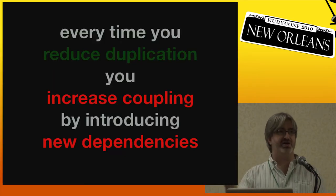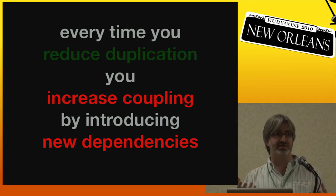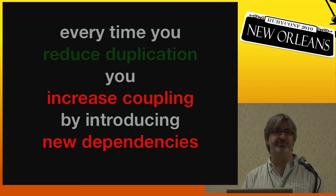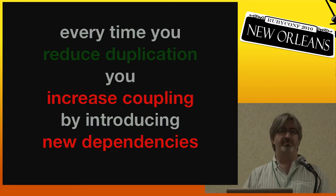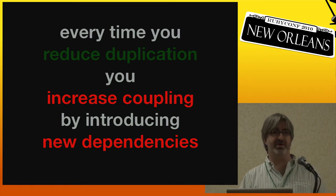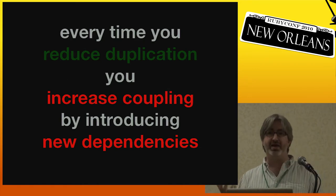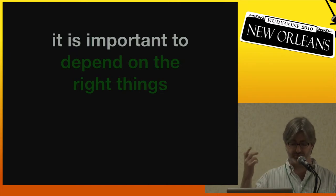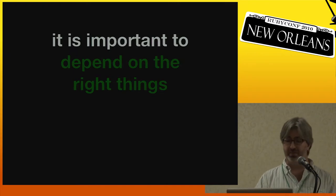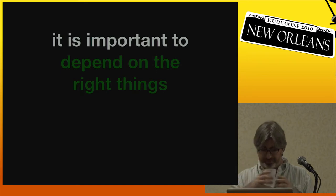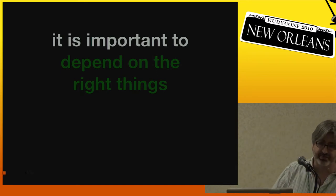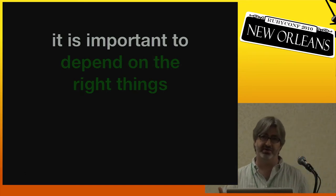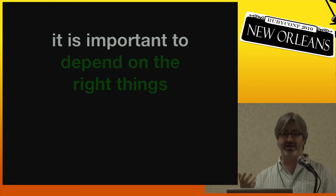Every time you reduce duplication, you're going to add new dependencies and increase coupling. Dependencies we have to have — the important thing is to manage them. It's important to depend on the right things. So how do you know what to depend on? There are a number of principles other than the DRY principle that help us figure that out.